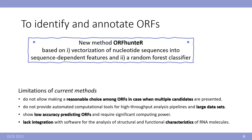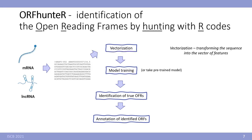To identify and annotate open reading frames we propose our ORFHunter method based on vectorization of nucleotide sequences into sequence dependent features and a random forest classifier. ORFHunter is identification of the open reading frames by hunting with R codes.